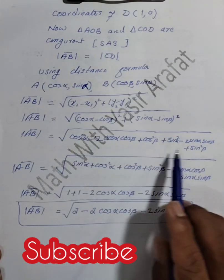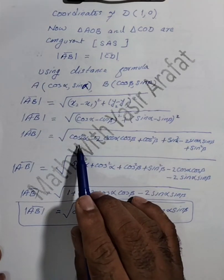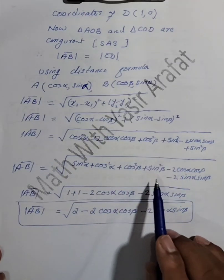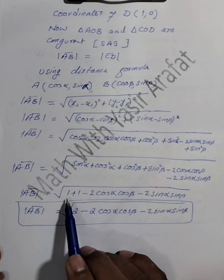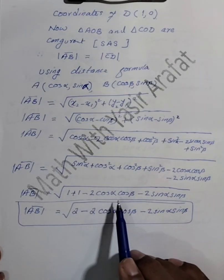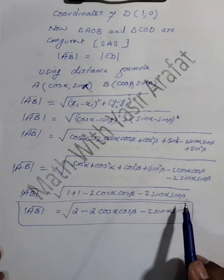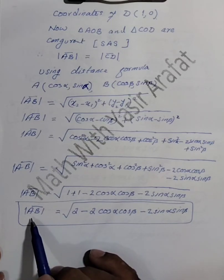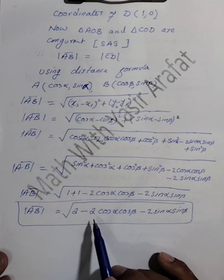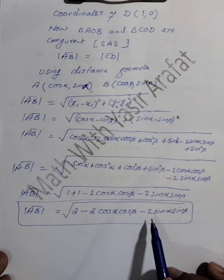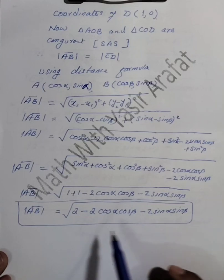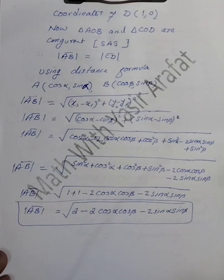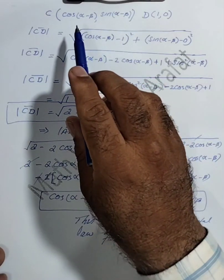Since cos²α + sin²α = 1 and cos²β + sin²β = 1, we get AB² = 1 + 1 - 2 cos α cos β - 2 sin α sin β. Therefore AB² = 2 - 2 cos α cos β - 2 sin α sin β.